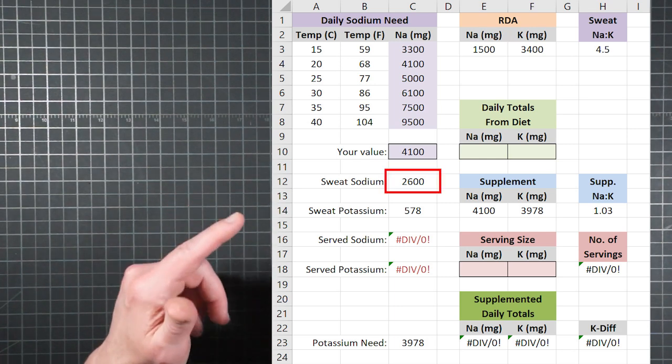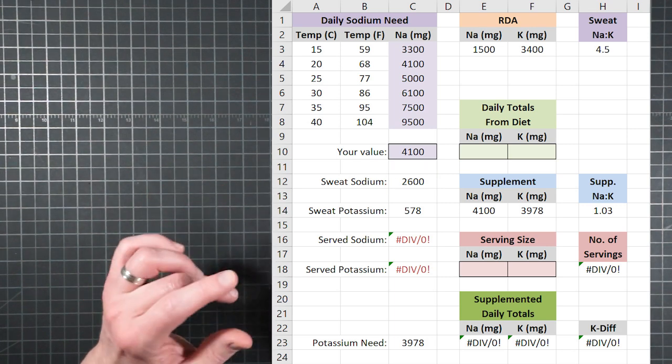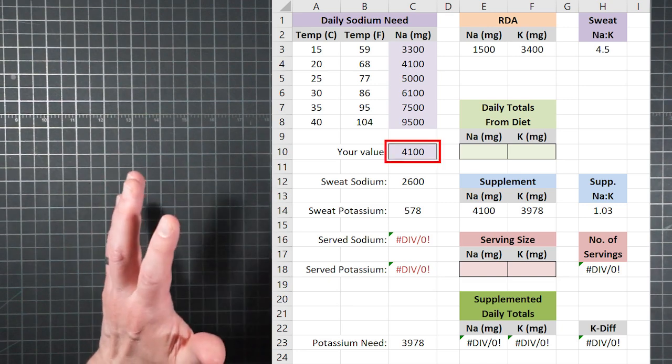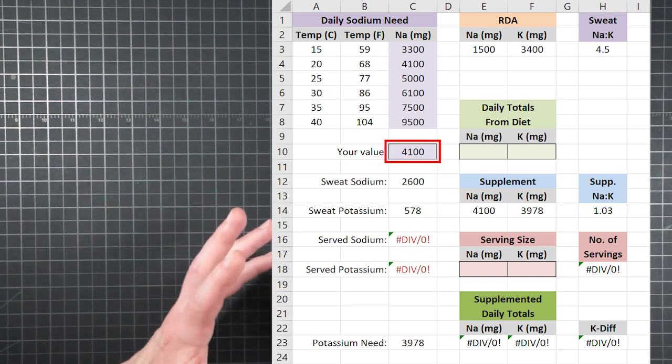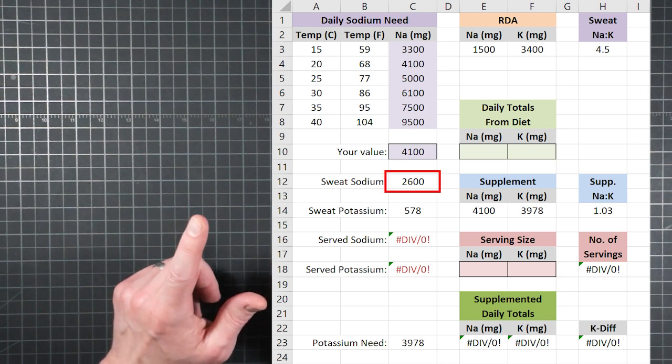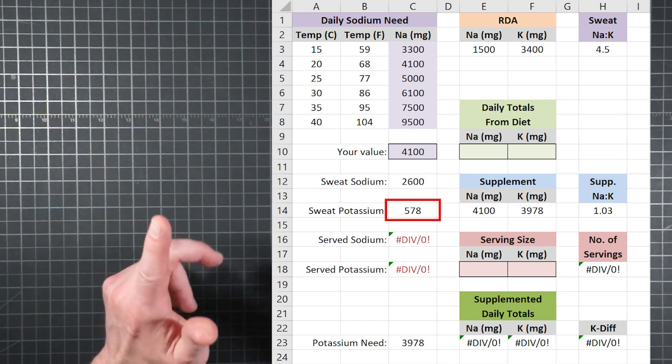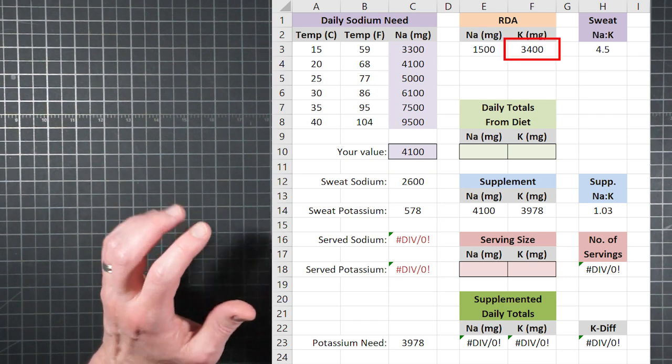So that's how the calculator is built. When you select your daily sodium need from the OptiComp data table, the calculator assumes 1,500 milligrams of that is basic daily requirement. Therefore, the additional 2,600 milligrams must be what's from your sweat. So obviously, if your daily need is 4,100 milligrams, you need to consume 4,100 milligrams.